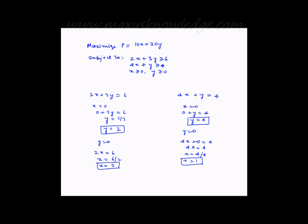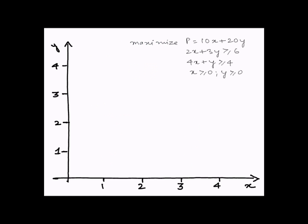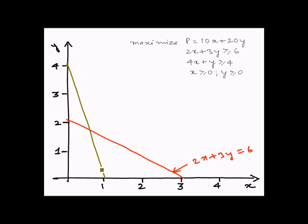With this information, let us plot these two lines on the graph. For the first line, which is 2x plus 3y is equal to 6, the x intercept is at 3 and the y intercept is at 2. For the next line, which is 4x plus y is equal to 4, the x intercept is at 1 and the y intercept is at 4.